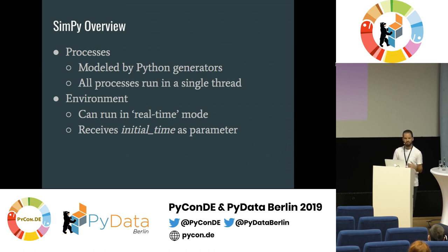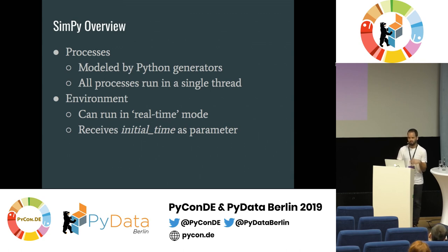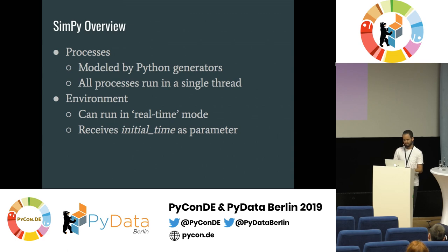The approach I described is called 'as fast as possible' — the simulation tries to run as fast as it can, immediately moving from one event to the next. But we can also run SimPy in real-time mode, which tries to follow real time by waiting until the time of the next event arrives before processing it. We may want this for manual tests in the simulation or when combining real hardware in our simulation.